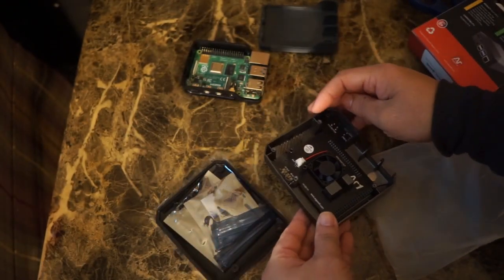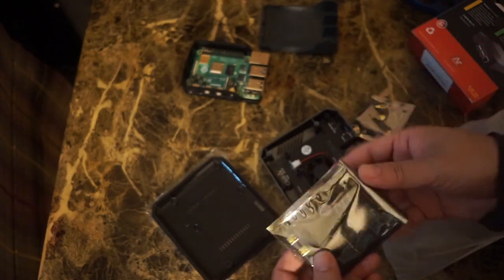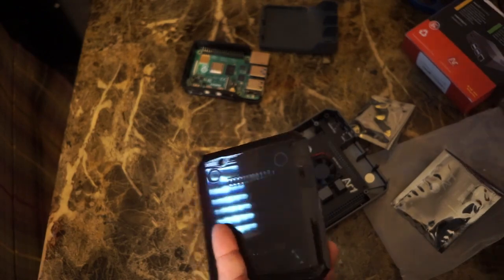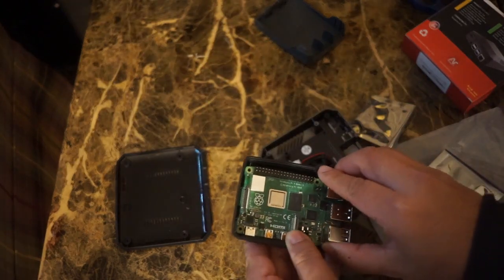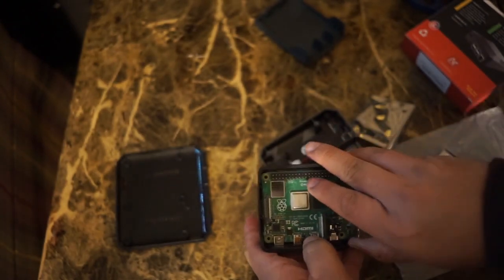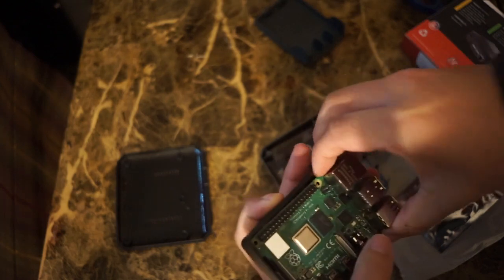There's the fan right there. The other cool thing about this case is it also comes with this adapter which will move all the plug-ins onto one side, because right now the Raspberry Pi micro SD card is on the left side and the USB 2 and USB 3 are on the other side. It's kind of annoying if you're trying to plug all your cables in on one side only.